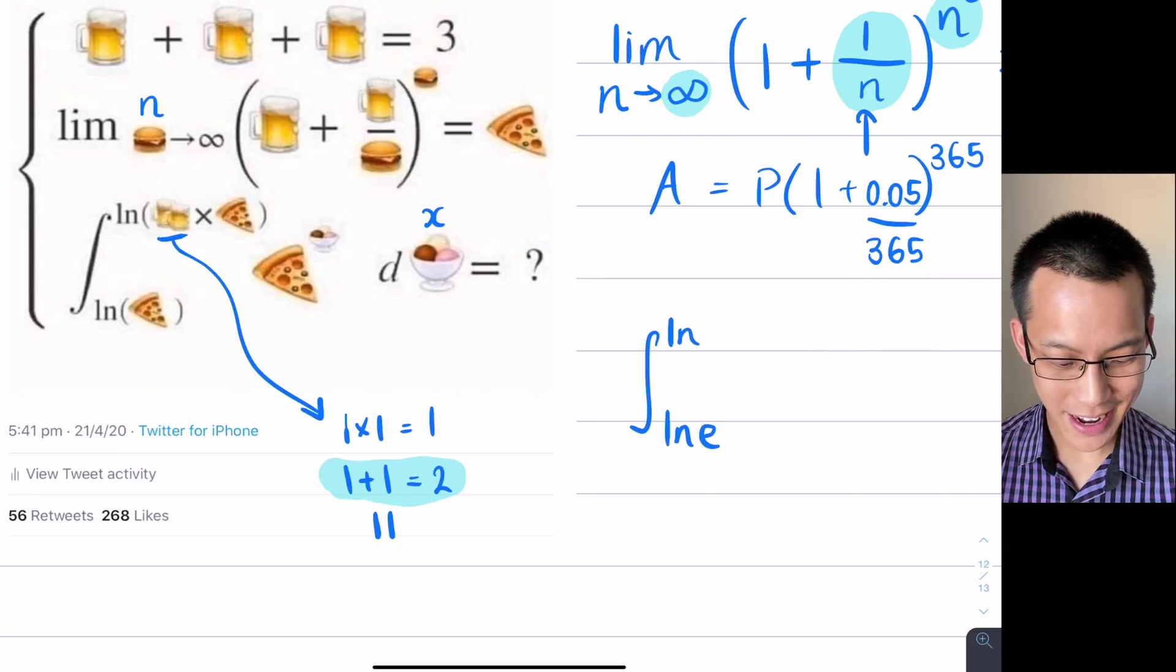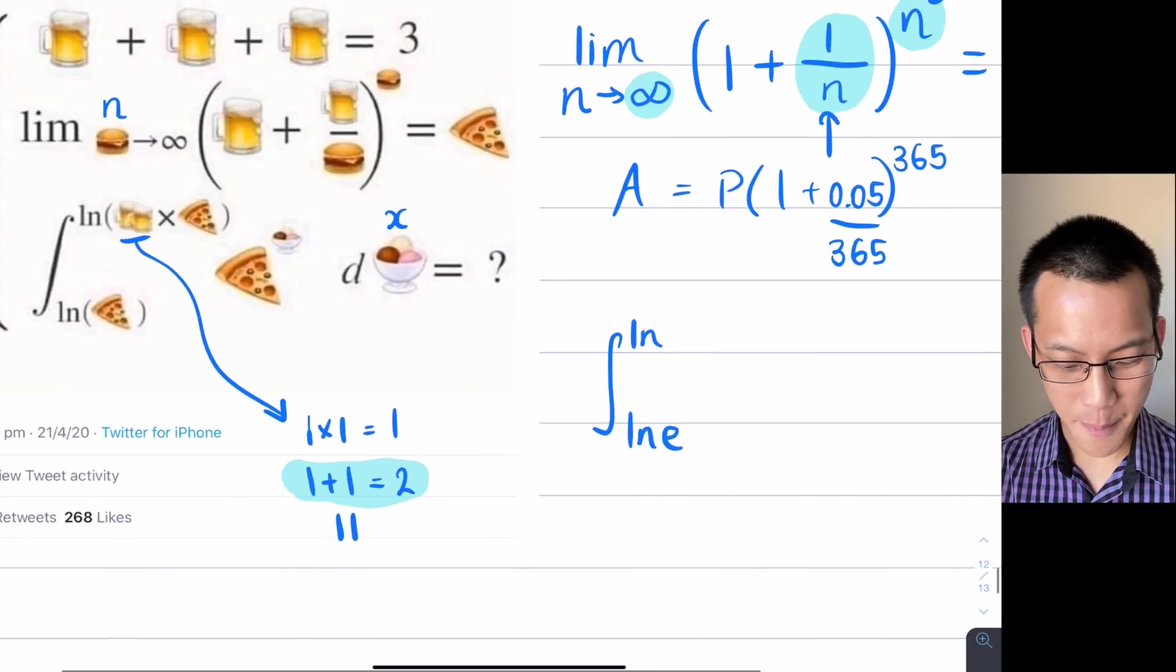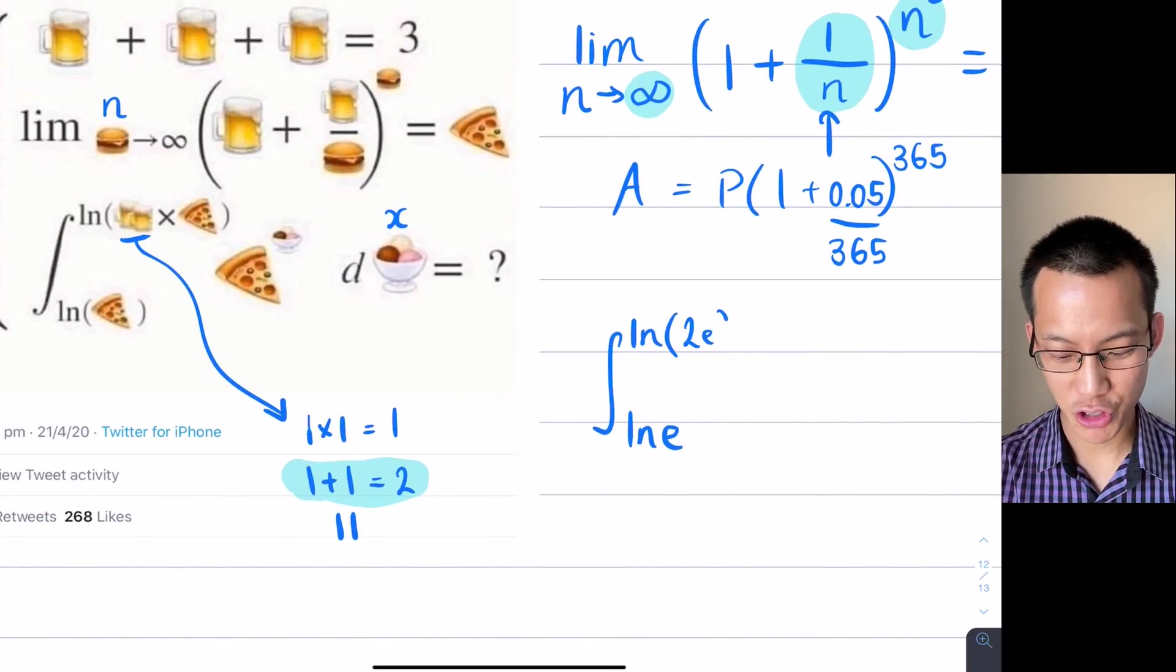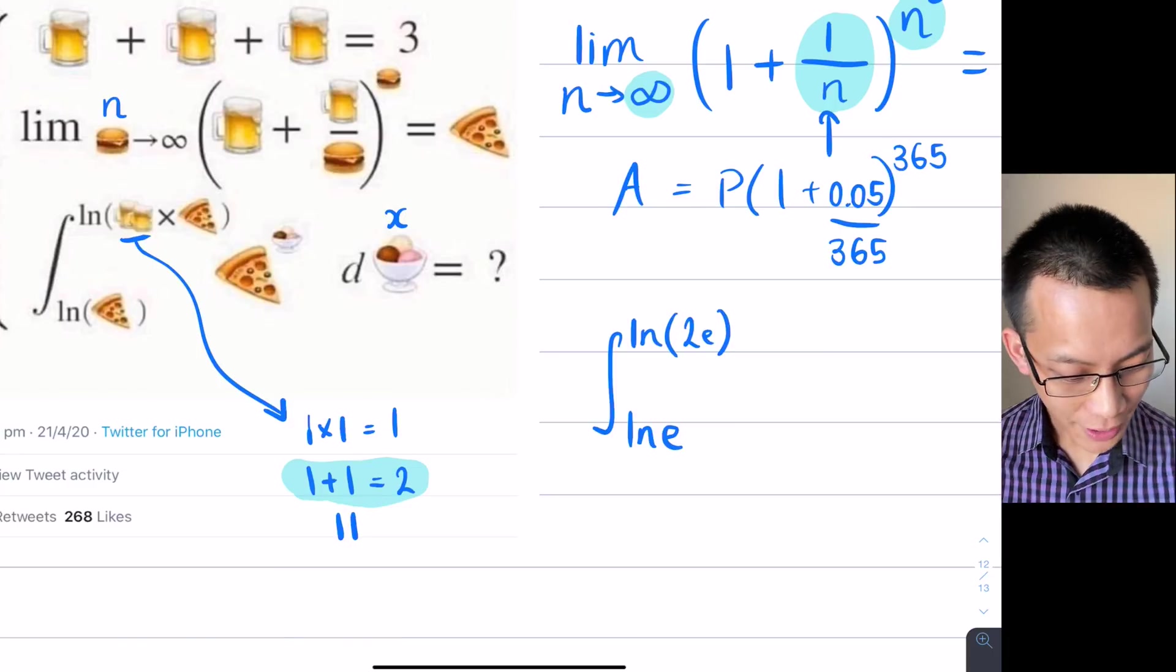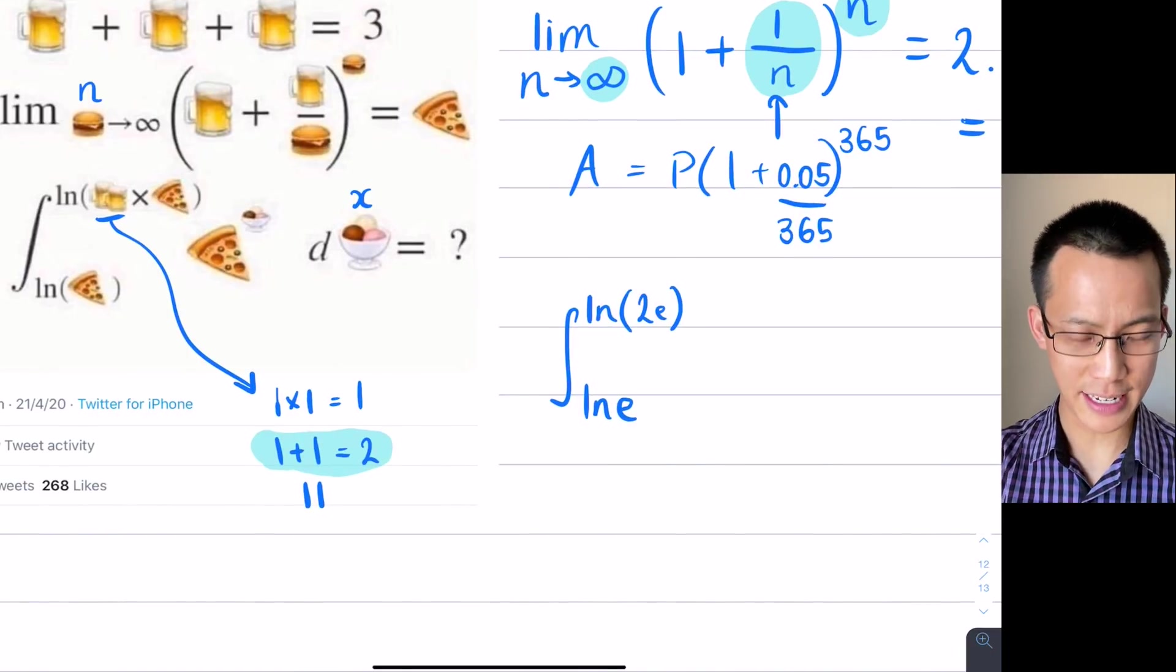So, for now, what I'm going to write is, taking those two beer emojis to indicate 2, my natural log is 2 times e, so I'm just going to write 2e, like so. Okay, so I've done the boundaries, and now I'm going to have a look at the integrand here, the thing being integrated.